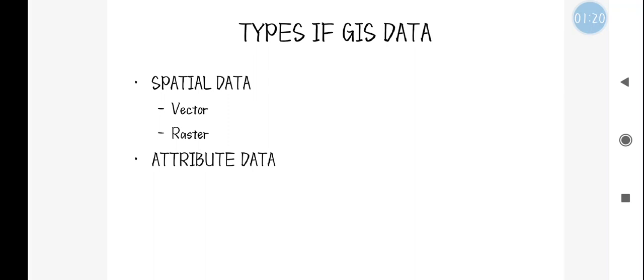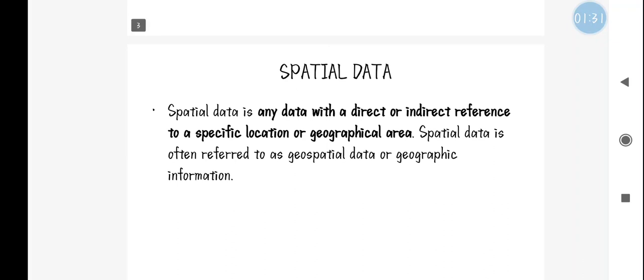There are two major types in GIS: spatial data and attribute data. Spatial data is furthermore divided into two types — vector and raster.